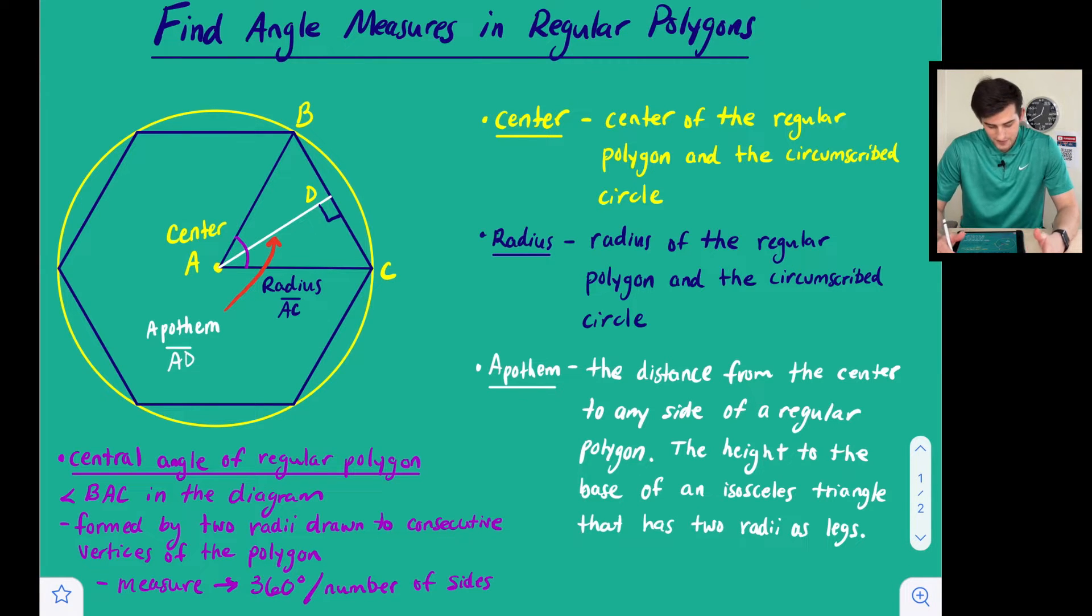If we look at this diagram on the left side of our screen, we have in yellow a circumscribed circle. In navy blue, we have a regular hexagon where each of the vertices is on the circumscribed circle. Then we have the center of our circle, center A, and that brings us to some of these vocabulary words.